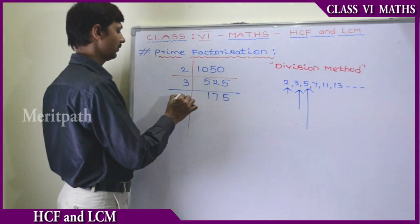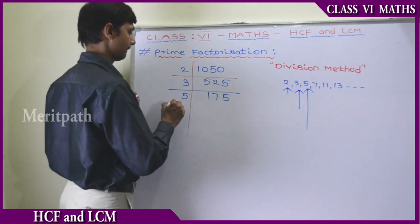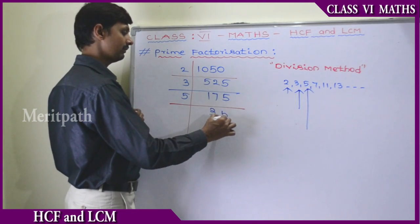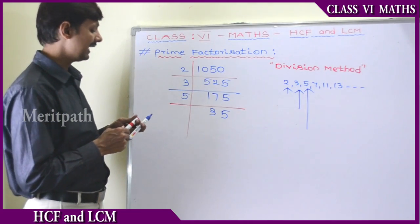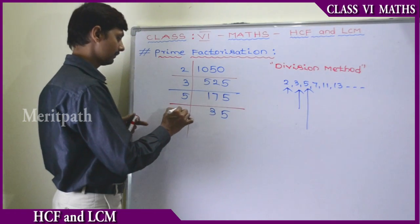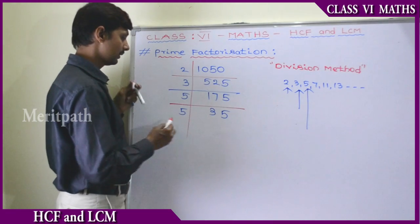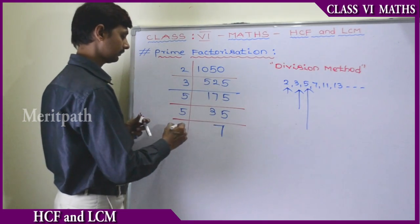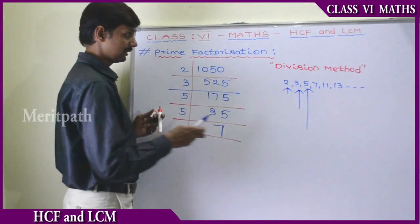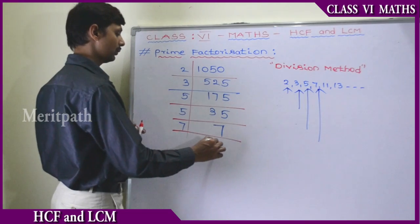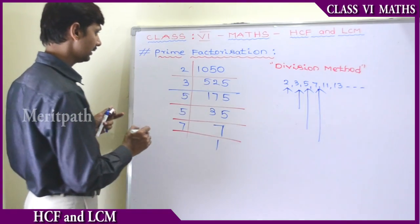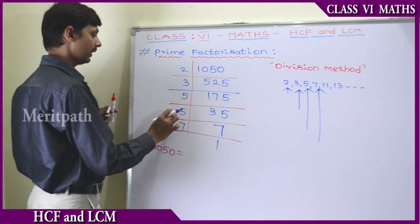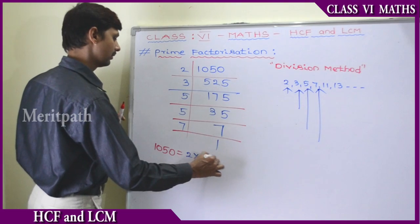175 ÷ 5 = 35. Then 35 ÷ 5 = 7. The units digit is 5 so we can take 5 again. Then take the next prime number 7: 7 ÷ 7 = 1. So the prime factors of 1050 are 2, 3, 5, 5, 7. This is the division method for prime factorization.